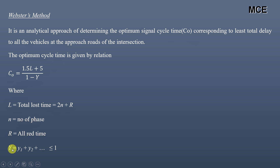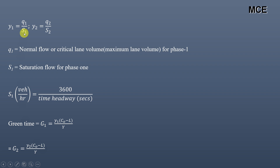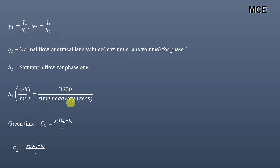Y is the sum of y1 + y2 and so on, and its value should be less than or equal to 1. These y1 and y2 are the ratios of q divided by s — where q is the normal flow or critical lane volume (maximum lane volume for that phase) and s is the saturation flow for the respective phase. If saturation flow is not given, you can calculate it by dividing 3600 by the headway. The green time for each phase is given as: G = (y / Y) × (C0 − L).